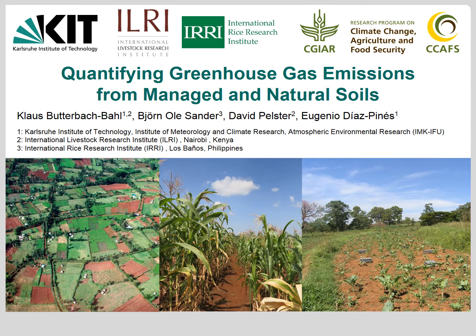In this video we will present some key elements of the book chapter 'Quantifying Greenhouse Gas Emissions from Managed and Natural Soils' in the frame of the CGIAR Research Program on Climate Change, Agriculture and Food Security. We will focus primarily on measuring the anthropogenic greenhouse gas emissions from smallholder agricultural systems in Sub-Saharan Africa, providing practical recommendations and introducing useful tools to implement and optimize chamber-based greenhouse gas flux experiments.